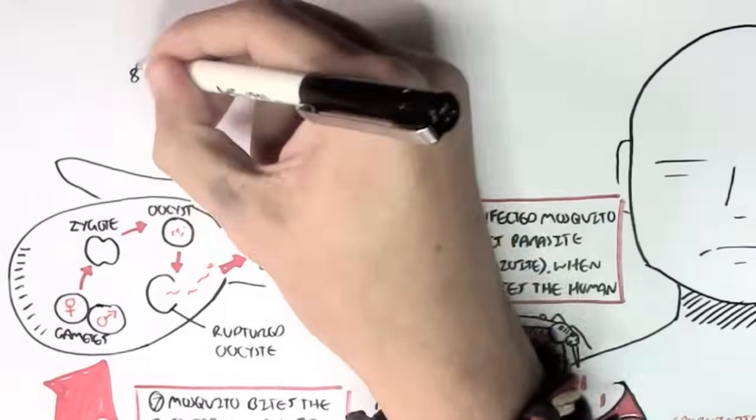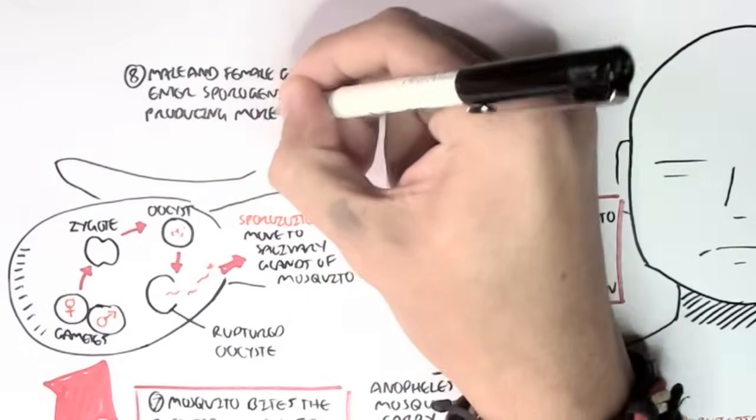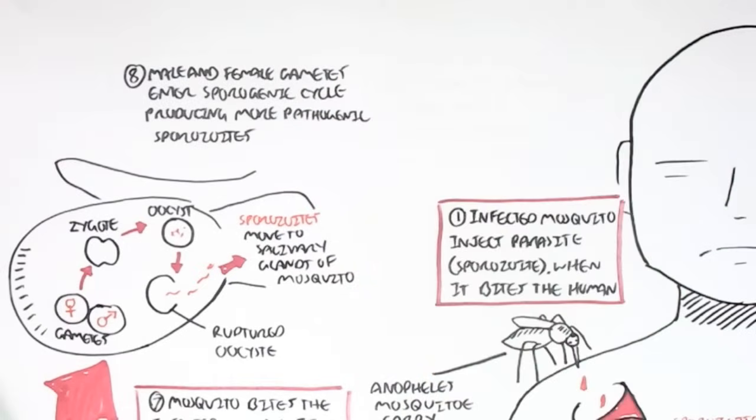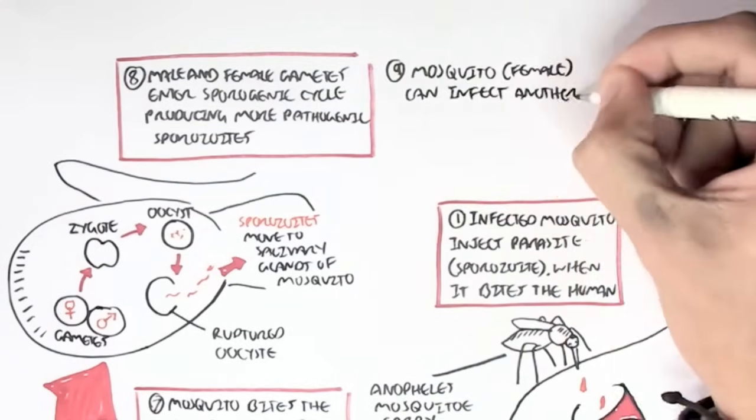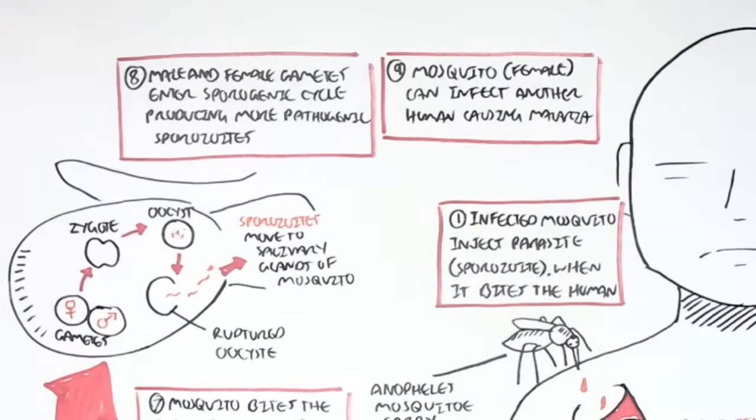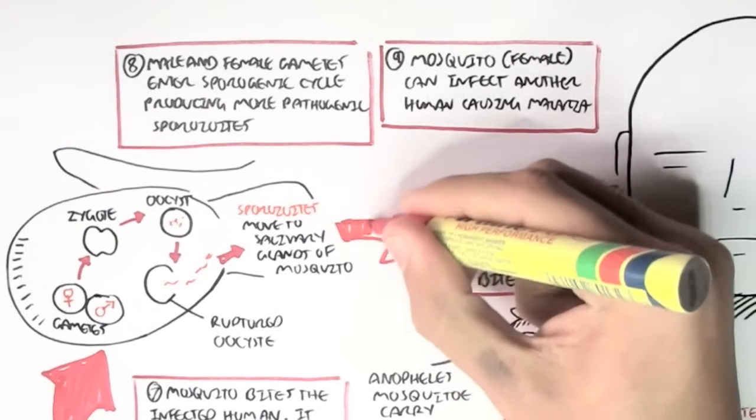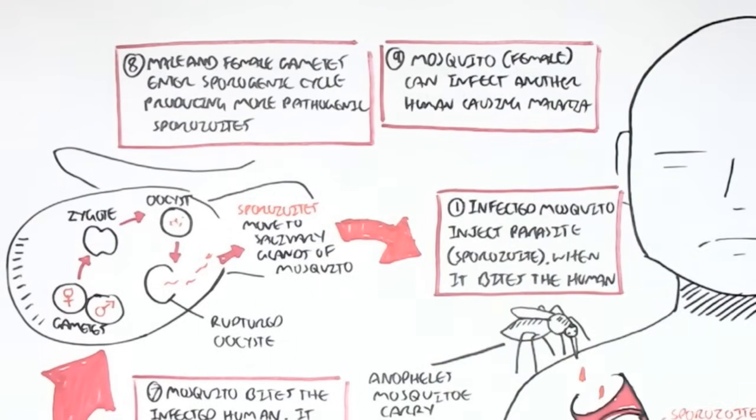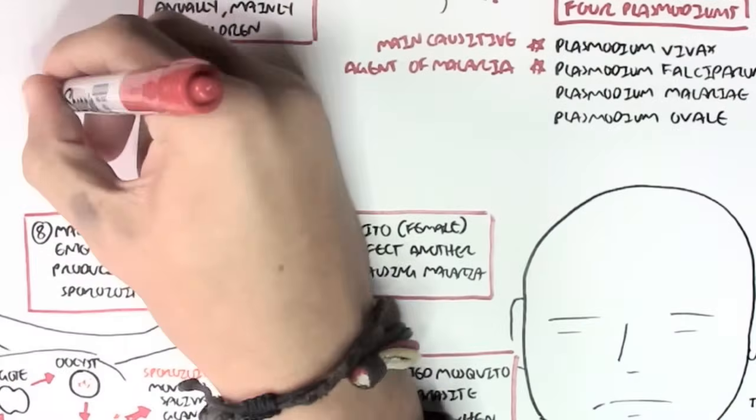So, again, the male and female gametes enter the sporogenic cycle, producing more pathogenic sporozoites. The mosquito, in this case a female, can then bite another human and infect it, causing malaria. And this cycle will continue. The infected Anopheles mosquito can then inject the parasite sporozoite into another human being, causing malaria.